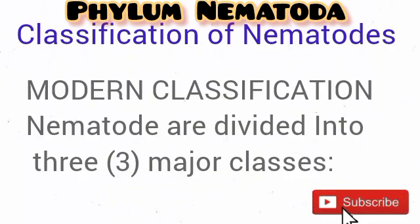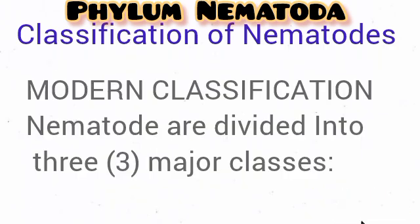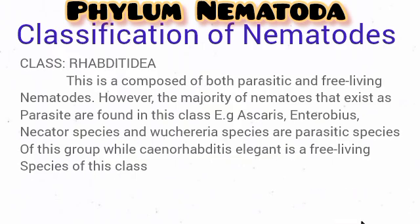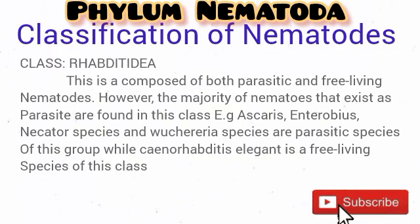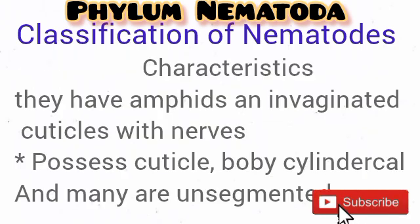Recent classification divides the Phylum Nematoda into numerous classes, one of which is Rhabditida. Rhabditida comprises both free-living and parasitic species; however, the majority are parasitic and include Ascaris, Enterobius, Necator species, Wuchereria species, and numerous others. Examples of the free-living species include Caenorhabditis species.